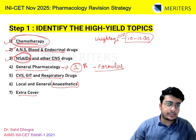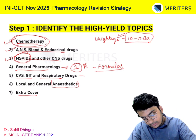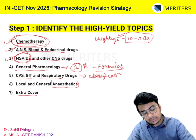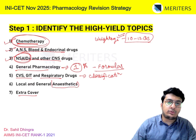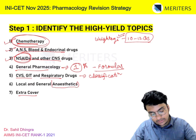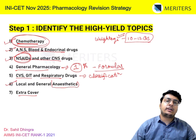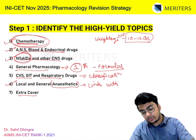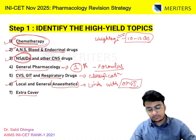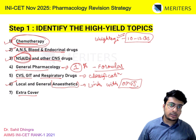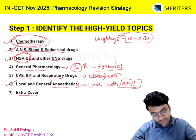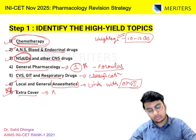CVS, GIT, and Respiratory drugs are not as critical, but you must know the classification — which drug belongs to which class, as questions come mostly from classifications here. Local and General Anesthesia is again important, and you can link it with Oral and Maxillofacial Surgery, where anesthetics are covered extensively. Covering anesthesia well helps you across 2 to 3 subjects.